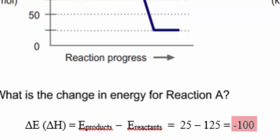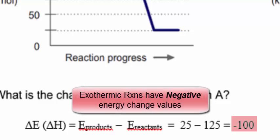By convention, negative change in energies, in this case negative 100, would imply an exothermic reaction.